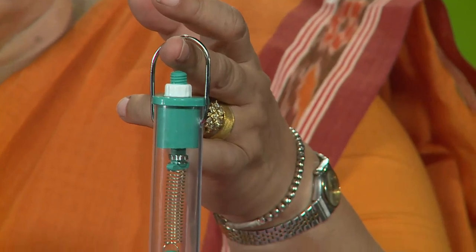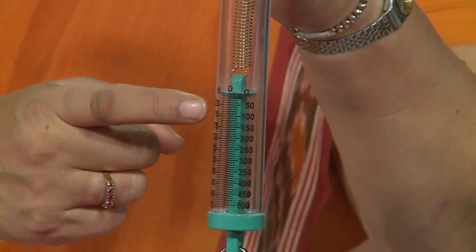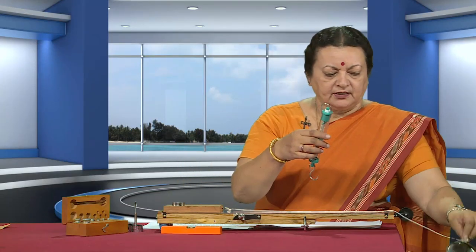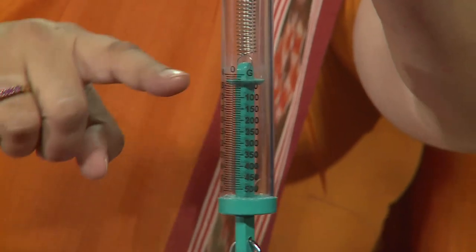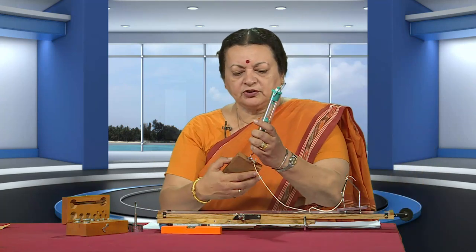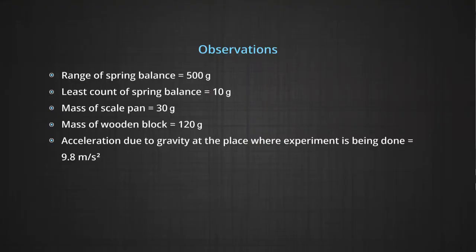Let us now take observations. First, we study the spring balance: its range is 0 to 500 grams and its least count is 10 grams. Next, we find the mass of the pan — without it resting on anything — which is 30 grams. We also find the weight of the block by suspending it from the spring balance without letting it touch anything; its weight is 120 grams. Acceleration due to gravity at this location is taken as 9.8 m/s².